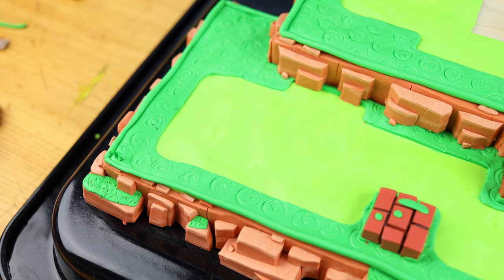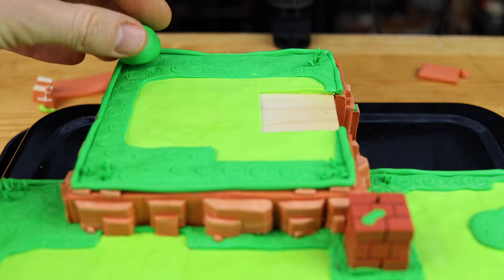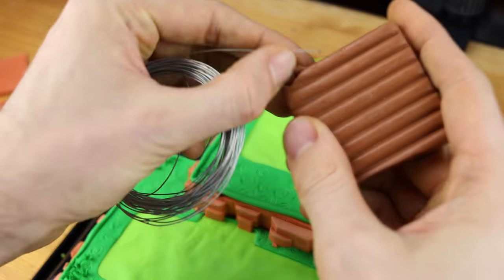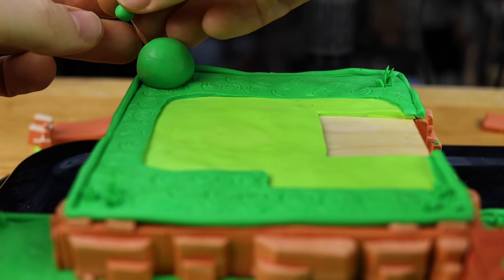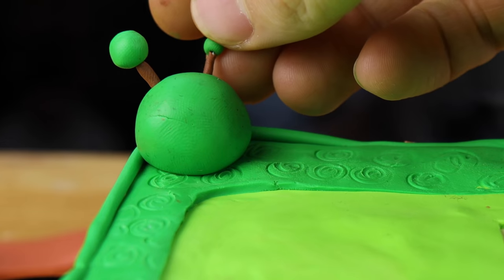It already looks so beautiful. Now let's place it on this baking tray and we take a little bit of brown to create these branches into the bush.